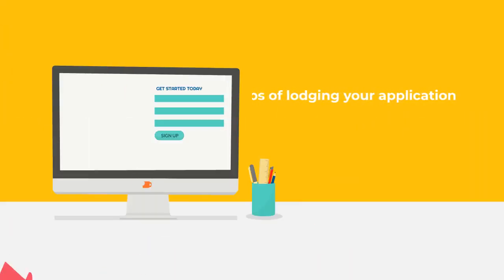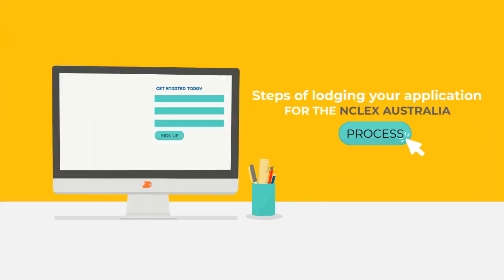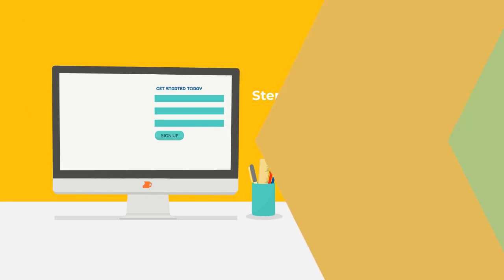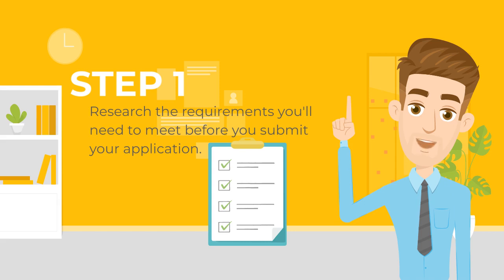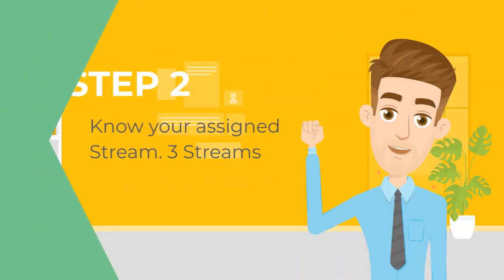Here are the steps of lodging your application for the NCLEX Australia process with AHPRA. Step 1: Research the requirements you'll need to meet before you submit your application. The applicant must know what documents are to be submitted and when and where to submit them. It is essential to review the necessary information to avoid delays in their application.